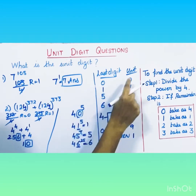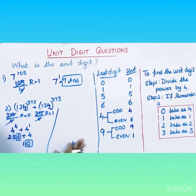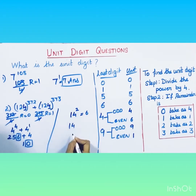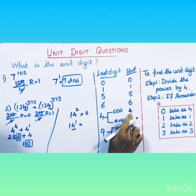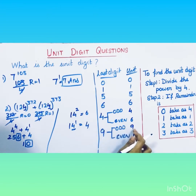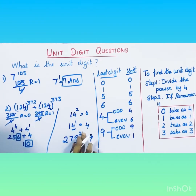To summarize the table: last digit zero → unit digit zero; last digit one → unit digit one; last digit five → unit digit five; last digit six → unit digit six. If the last digit is four and the power is even, the unit digit is six; if the power is odd, the unit digit is four. If the last digit is nine and the power is odd, the unit digit is nine; for example, 279 to the power 25 — last digit is 9, power is odd, so unit digit is nine. If the power is even, unit digit is one.